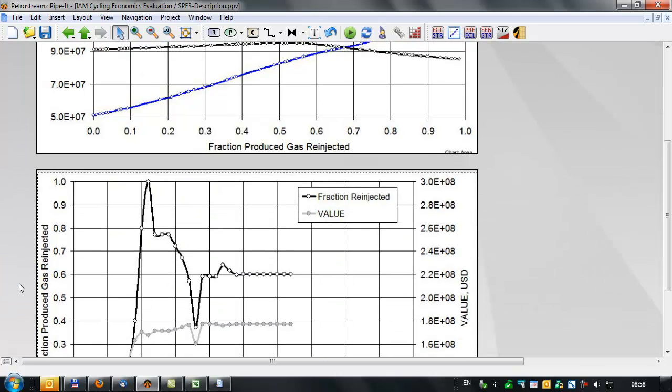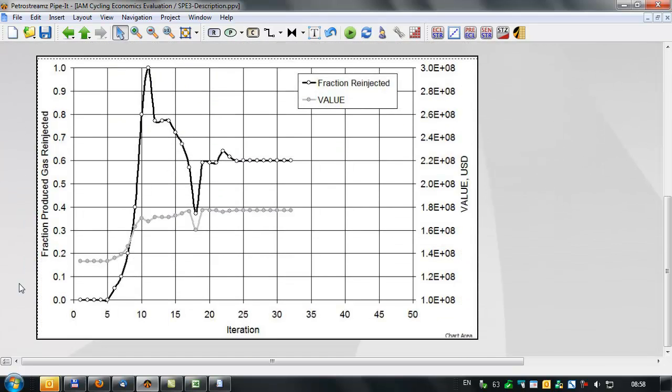Pipet also allows you to do optimization to identify, for example, what fraction of produced gas should be re-injected to maximize the net present value. And this is shown here after about 25 iterations.